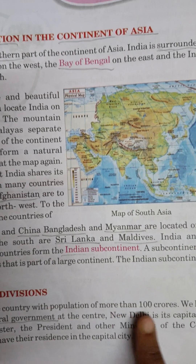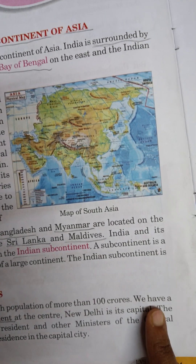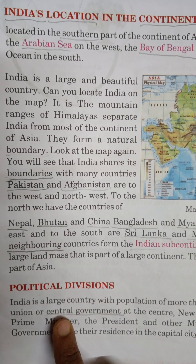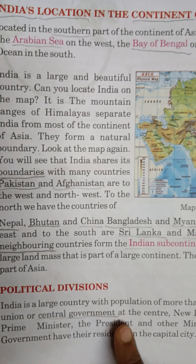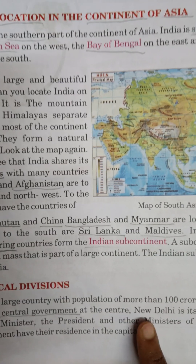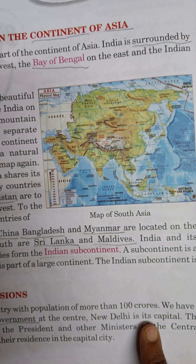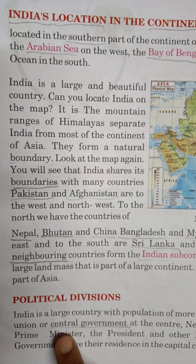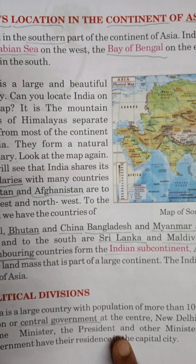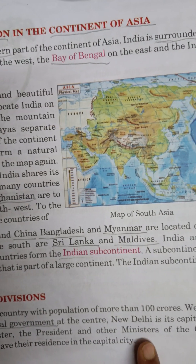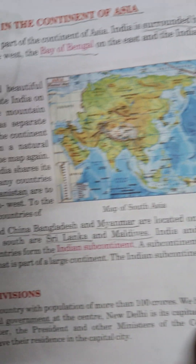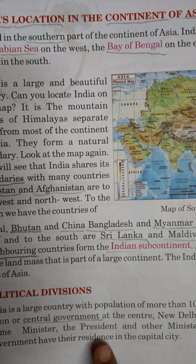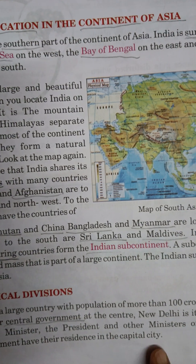Political Divisions. India is a large country with a population of more than 100 crores. We have a union or central government at the centre. New Delhi is its capital. The Prime Minister, the President and other ministers of the central government have their residence in the capital city.